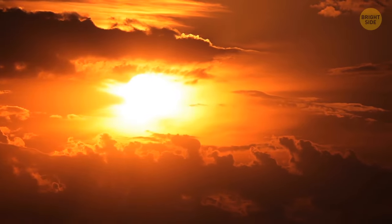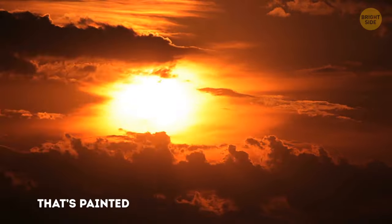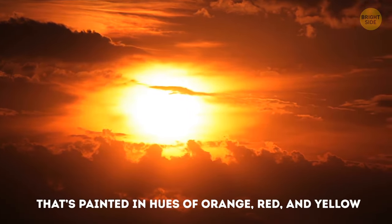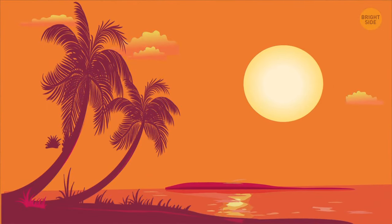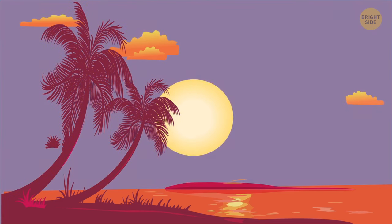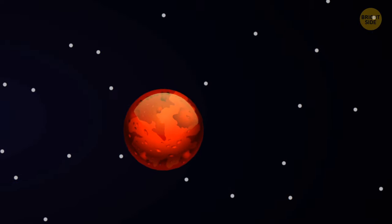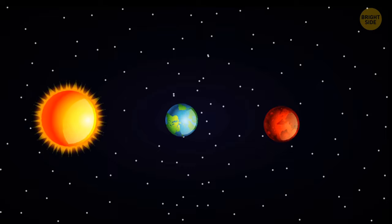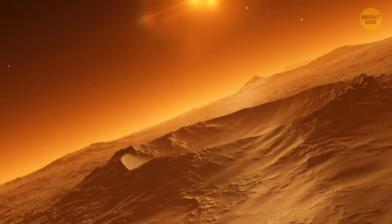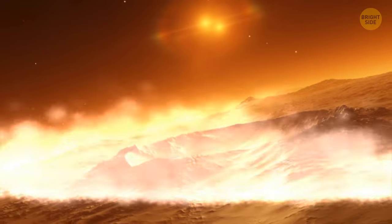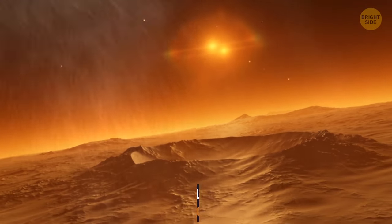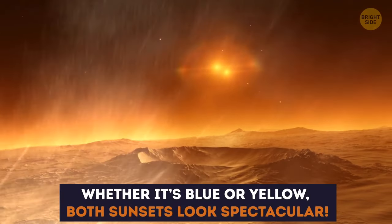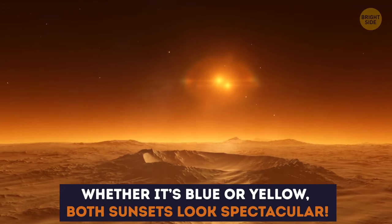On Earth, people are used to a beautiful sunset that's painted in hues of orange, red, and yellow. On Mars, however, the normally pinkish-red sky turns blue as the Sun goes down under the horizon. It's because Mars is much farther away from the Sun than Earth, making the sunlight less intense. The fine dust in the Martian atmosphere absorbs the blue light and gets rid of the warmer colors that you typically see on Earth. Whether it's blue or yellow, both sunsets look spectacular.